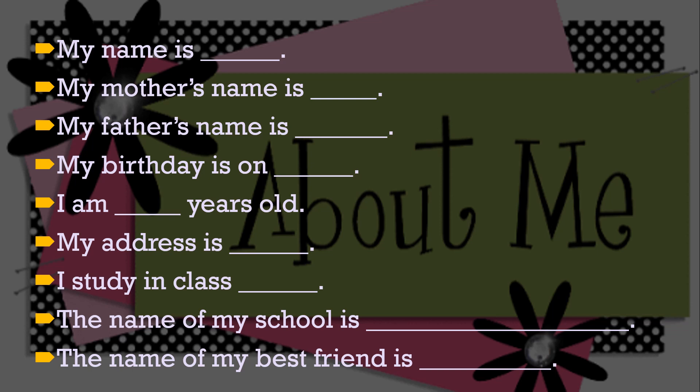After that, my mother's name is — what is your mother's name? My father's name is — what is your father's name? My birthday is on — here you have to write your birth date. I am blank years old — how many years are you old? My address is — here you have to write your address.